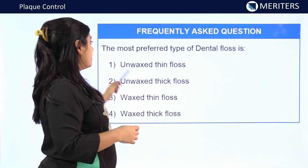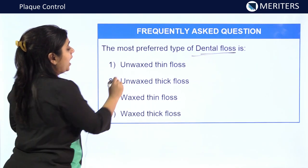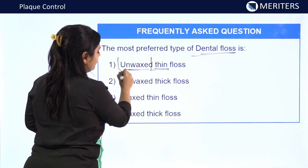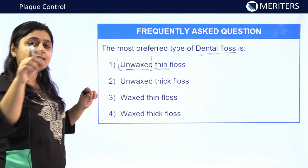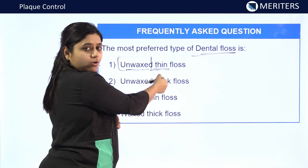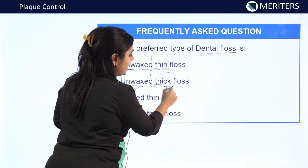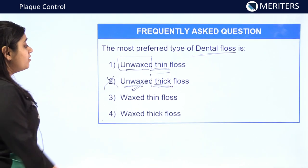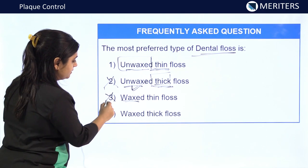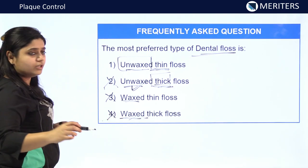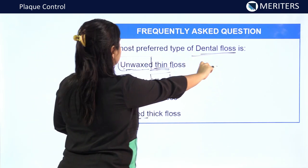The second question: what is the most preferred type of dental floss? Option 1 is unwaxed and thin floss. Unwaxed floss is the most preferred type, and thin floss passes easily between tight contacts. Option 2 — unwaxed and thick floss — is incorrect because thick floss cannot pass between tight contacts. Option 3 — waxed and thin floss — is incorrect because waxed floss is only preferable when very tight contacts are present. Option 4 — waxed and thick — is also incorrect. Therefore, the answer is option 1: unwaxed and thin floss.